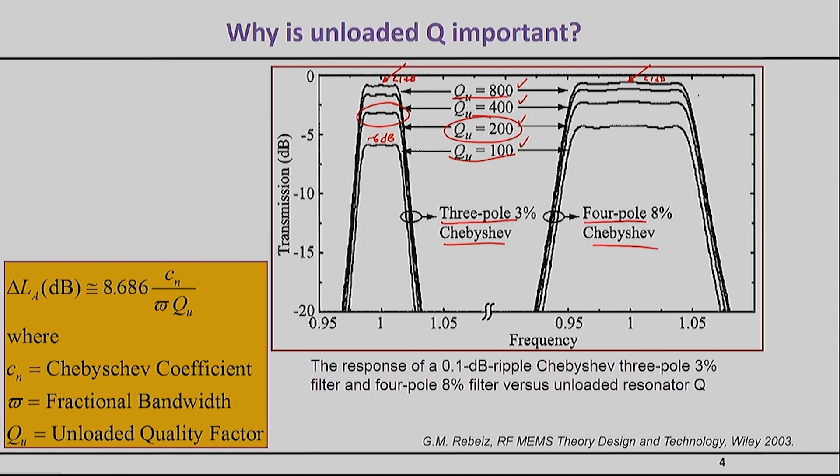The second lesson that these curves can teach us is that broadband filters are more forgiving than narrowband filters. Here's an example: this four-pole filter has an 8% bandwidth while this three-pole filter has a 3% bandwidth. Even though the design here is a four-pole filter, which in general means this would have higher loss than a three-pole, because this filter is so broadband compared to this one, its insertion loss is actually lower for a given quality factor. For example, look at the case for Q of 100: the narrowband filter has about 6 dB of loss, while this guy has less than 5 dB of loss.